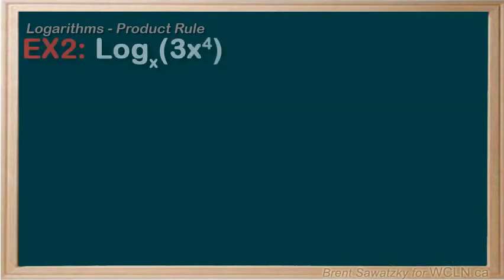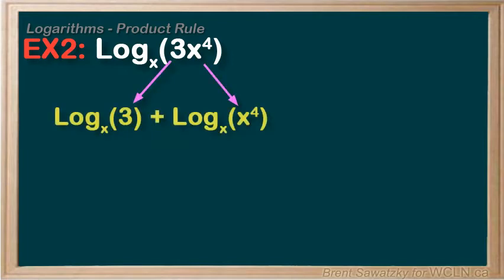Example two, a more algebraic one. Simplify log base x of 3 times x to the 4. If we were to break this one up using our new product rule, we'd have log base x of 3 plus log base x of x to the 4.